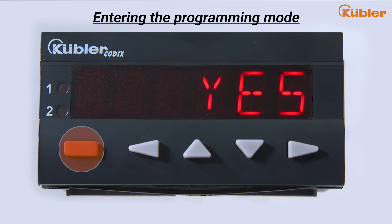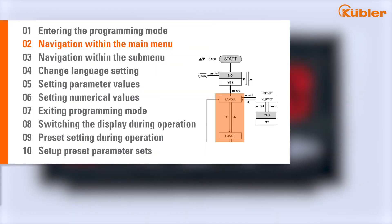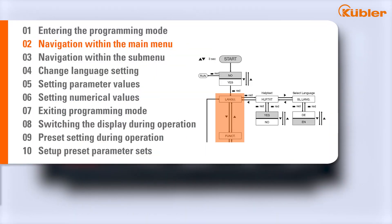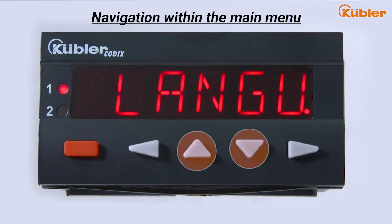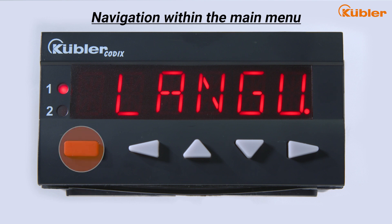The first menu item in the main menu appears in the display. The up and down keys can be used to navigate through the main menu. LED1 indicates your current position in the main menu. To access the sub-menus, press the enter key when the respective main menu item is selected.